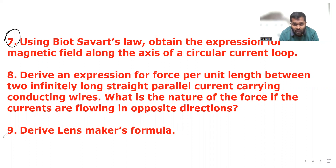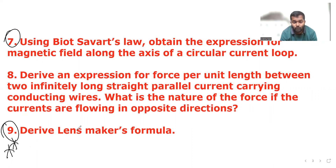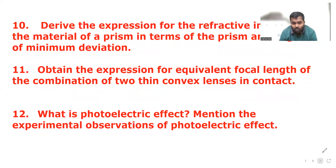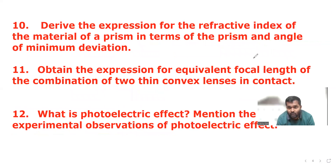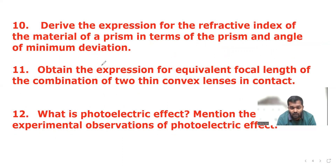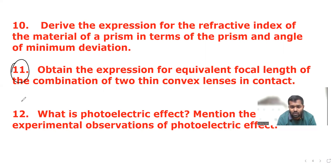The ninth question: derive the lens maker's formula. This is from the ray optics chapter and one of the most important questions — give priority to it. The tenth question: derive the expression for the refractive index of the material of a prism in terms of the prism angle and angle of minimum deviation — again an important question that appeared in previous year exams. The eleventh question: obtain the expression for equivalent focal length of the combination of two thin convex lenses in contact. This is a very simple question carrying five marks, so make sure you have prepared for it.